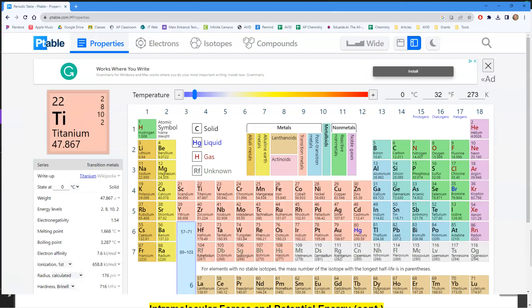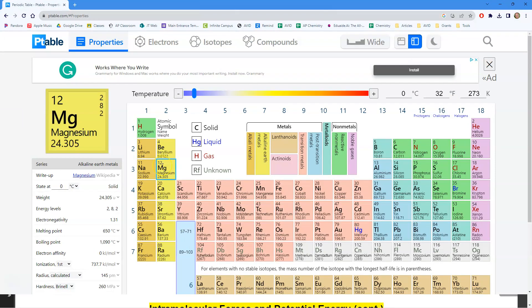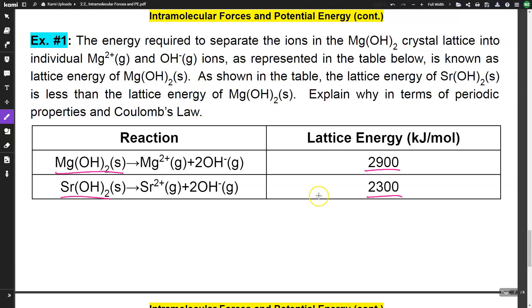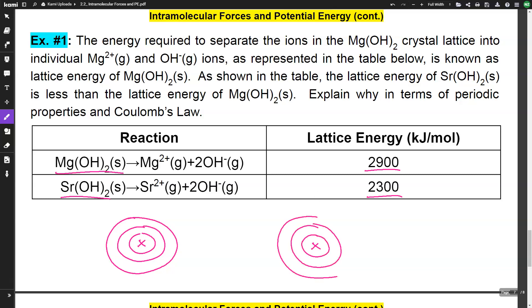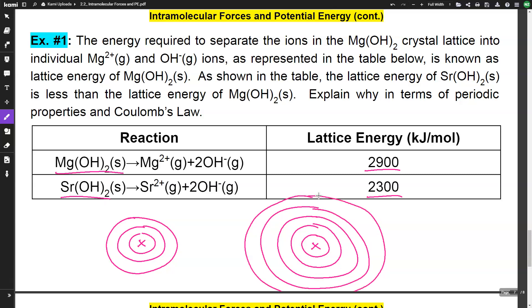Looking at our periodic table, magnesium is in the third period and strontium is in the fifth period — so magnesium is much smaller. Magnesium has three electron shells, whereas strontium is much, much bigger with five shells. The valence electrons in strontium are much, much further from the nucleus, so it's going to require less energy to separate out the ions.